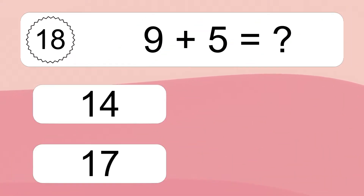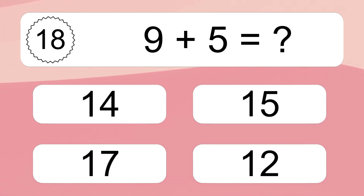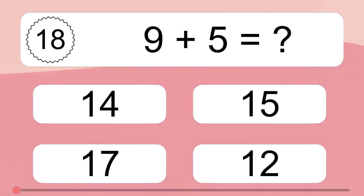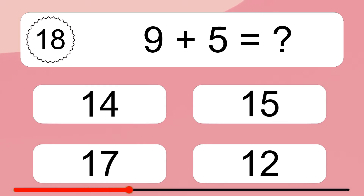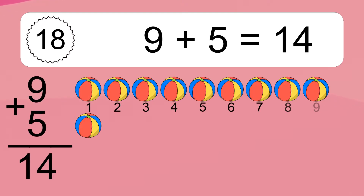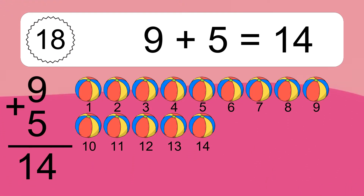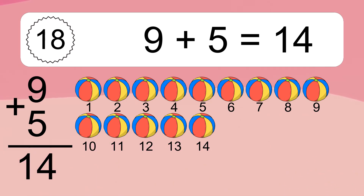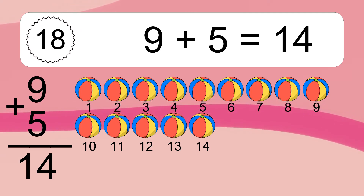9 plus 5 equals what? 9 plus 5 equals 14. Let's count it: 1, 2, 3, 4, 5, 6, 7, 8, 9, 10, 11, 12, 13, 14.